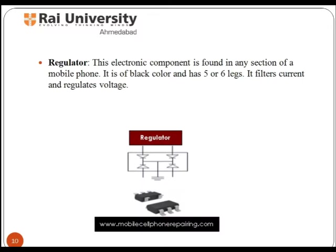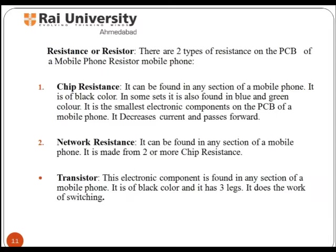A regulator is an electronic component found in any section of a mobile phone. It is black in color and has five or six legs. It filters current and regulates voltage. Chip resistance can be found in any section of a mobile phone. It is black in color in some sets, and also found in blue and green. It is the smallest electronic component on the PCB and decreases current while passing it forward. Network resistance is also found in any section and is made up of two or more chip resistances.